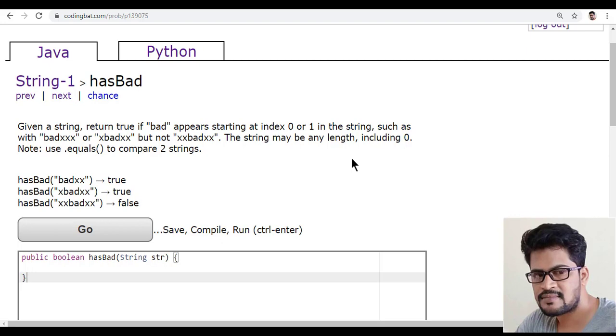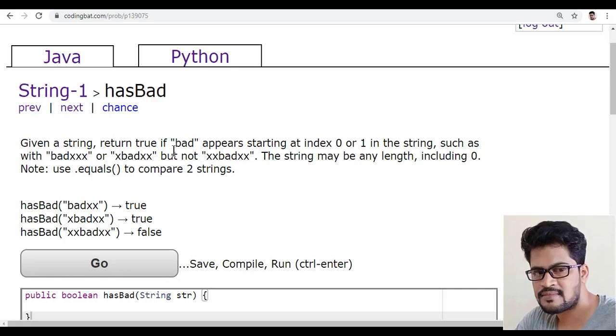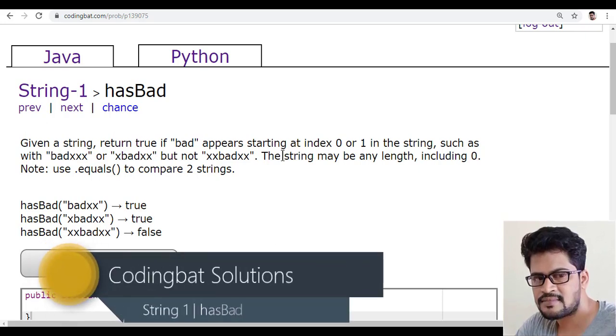Hello everyone and welcome to UI Brains, this is Naveen. In this video we're going to see a new question called hasBad. The question is: given a string, return true if 'bad' appears starting at index 0 or 1 in the given string.